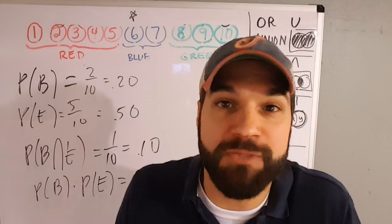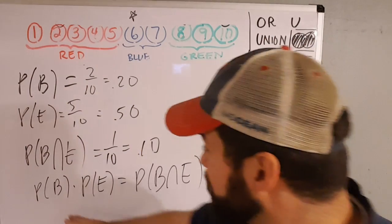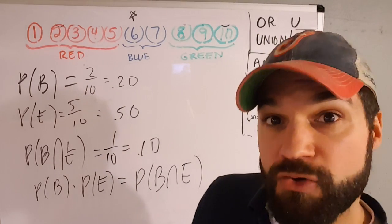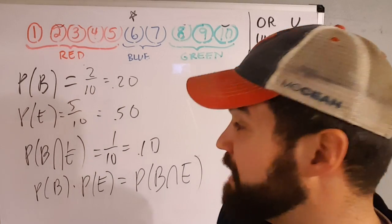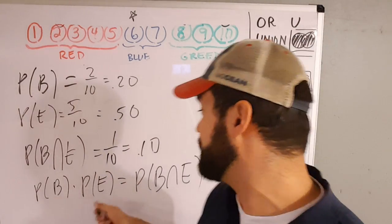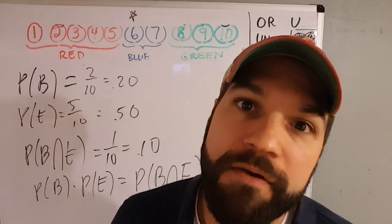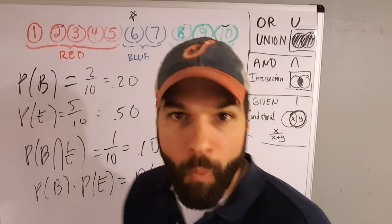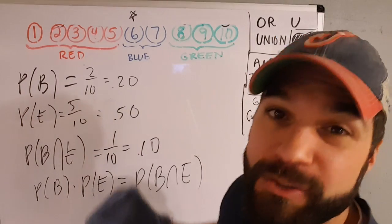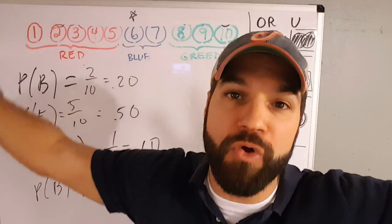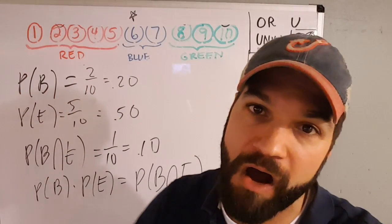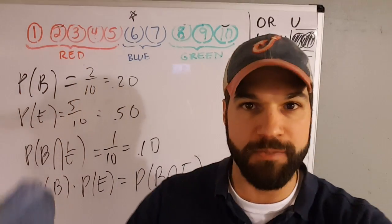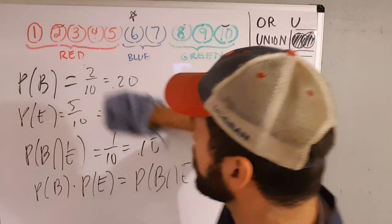When they are independent, it's pretty cool — you can just multiply them. That's actually one of the equations you can use to test for independence: if P(A) times P(B) equals P(A and B), they're independent. But what if they're not independent? That's what we're going to talk about now — a general rule that works for all of them. It's the general multiplication rule.